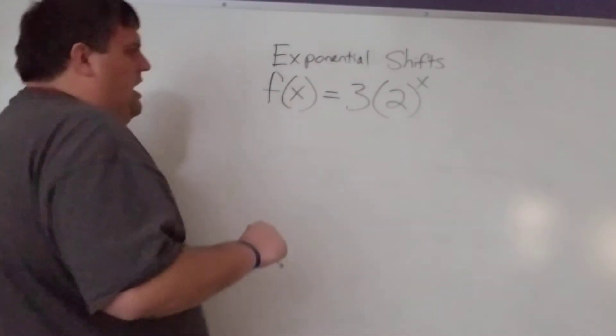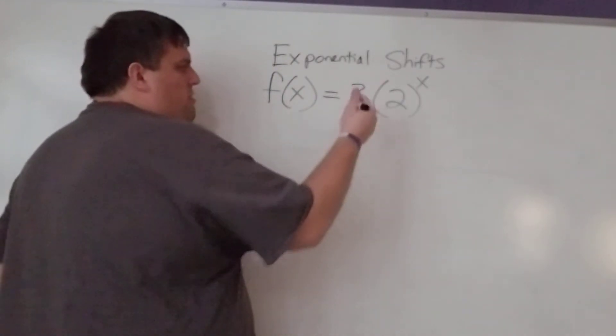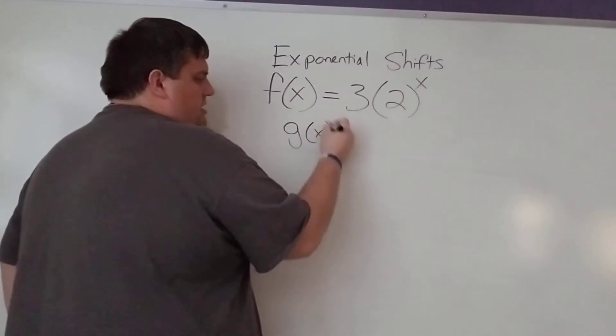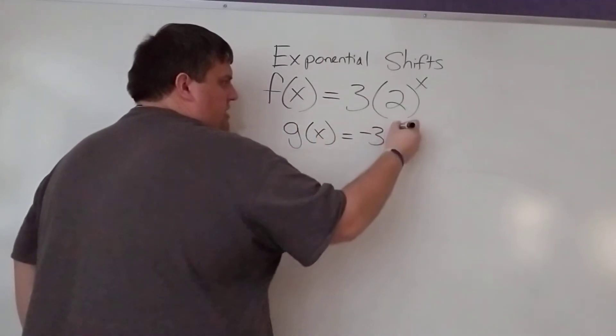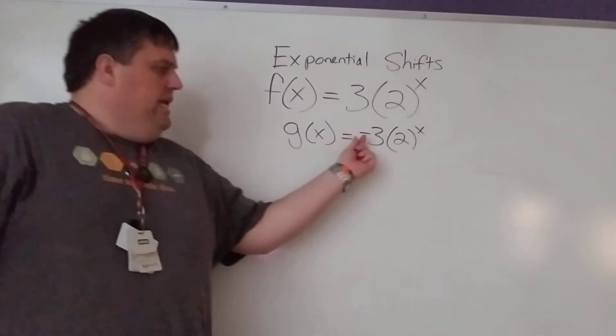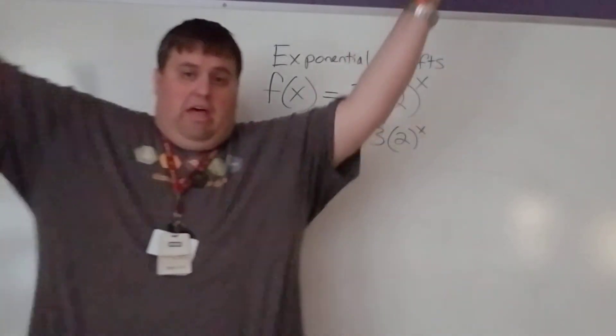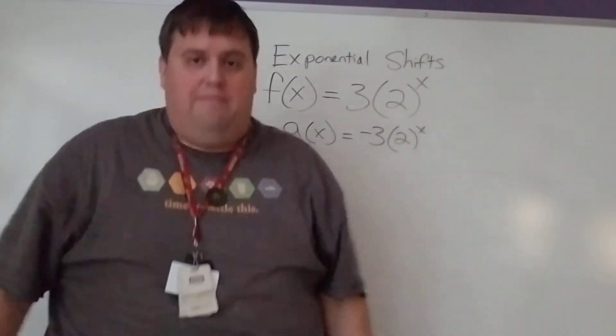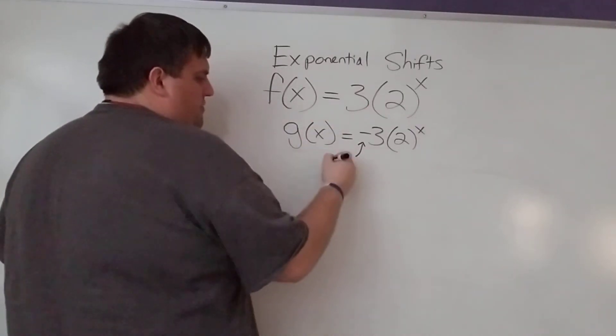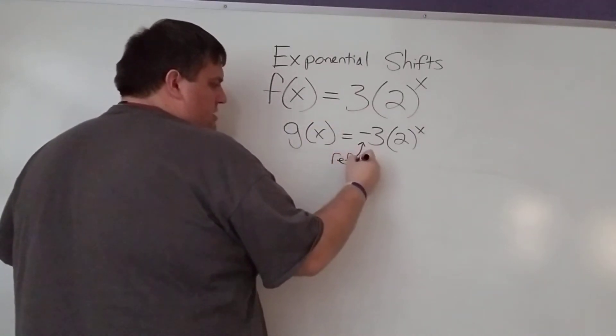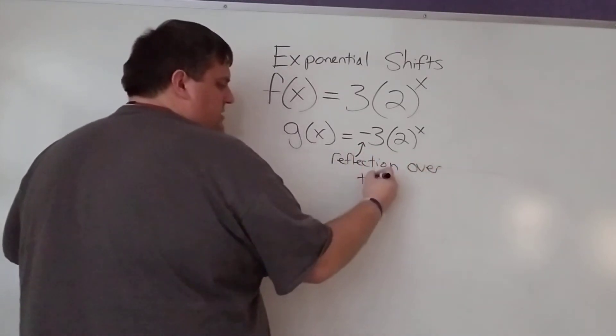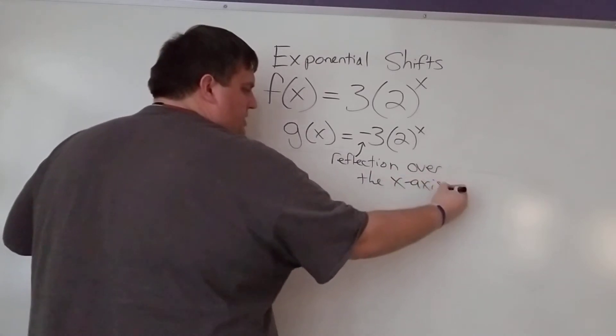First off, remember when we threw a negative in here, so let's say we had g of x, which is the same thing except for this is negative 3. That negative, if you remember our absolute value function was a v and it flipped it over, that's what it's still going to do. This is going to be a reflection over the x-axis.